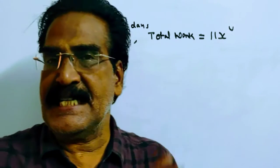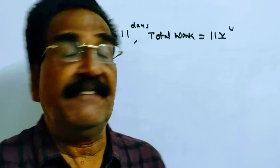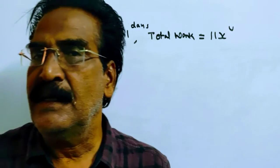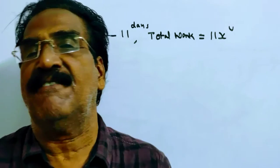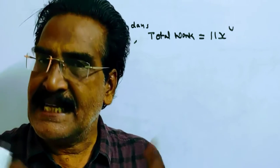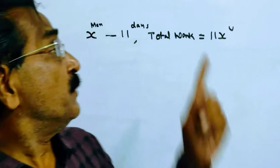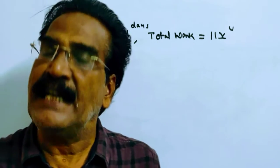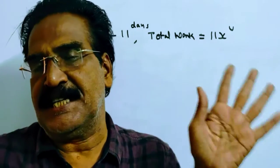There are X men in the group and they have decided to complete a work in 11 days. Each man can do 1 unit of work per day. Then X men can do X units of work per day. So in 11 days they can do 11X units of work. So now the total work is 11X units.